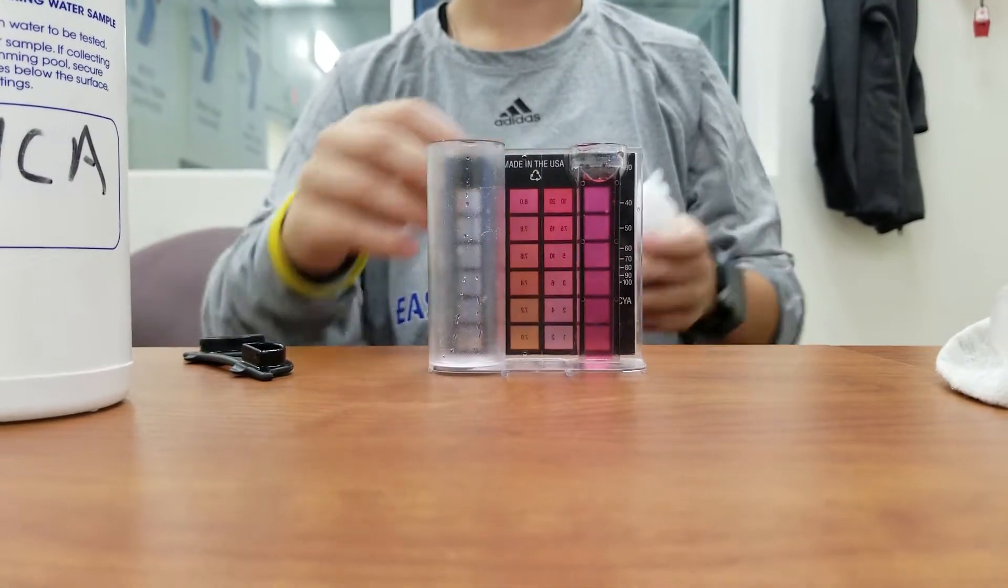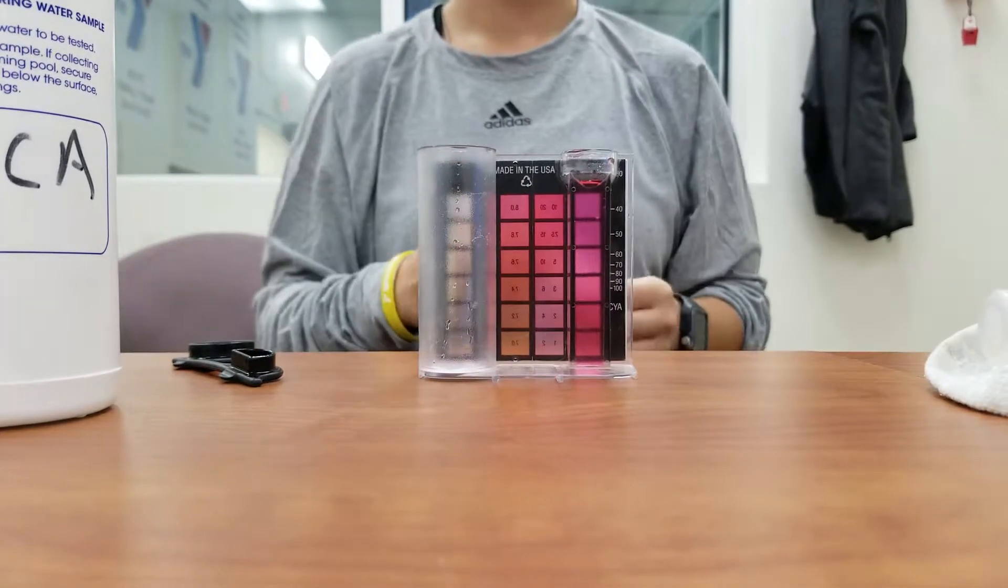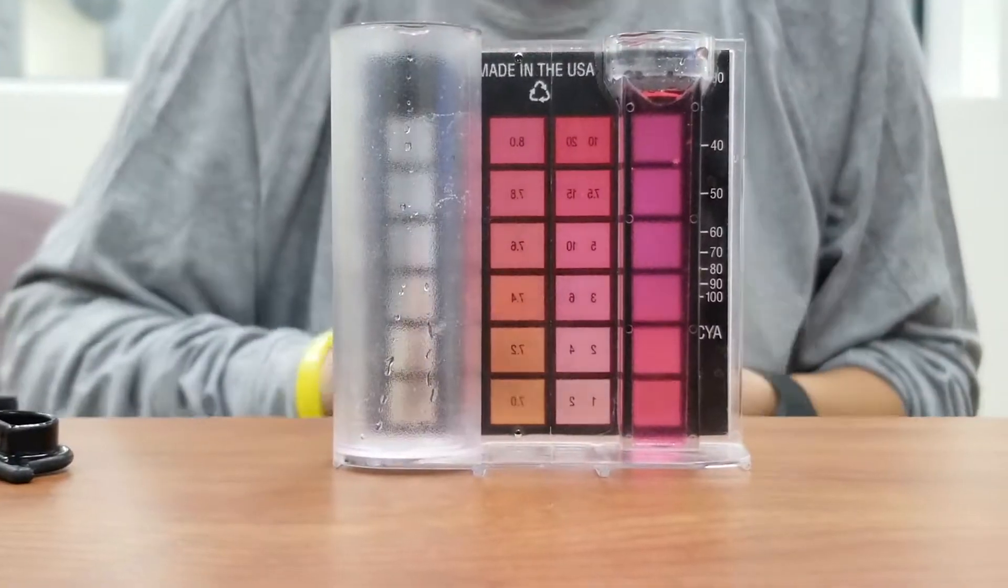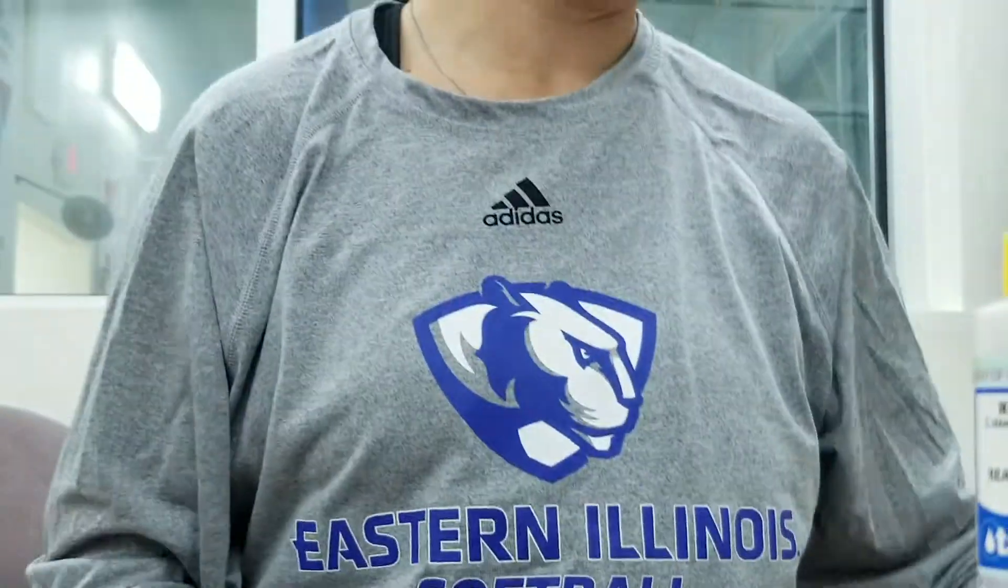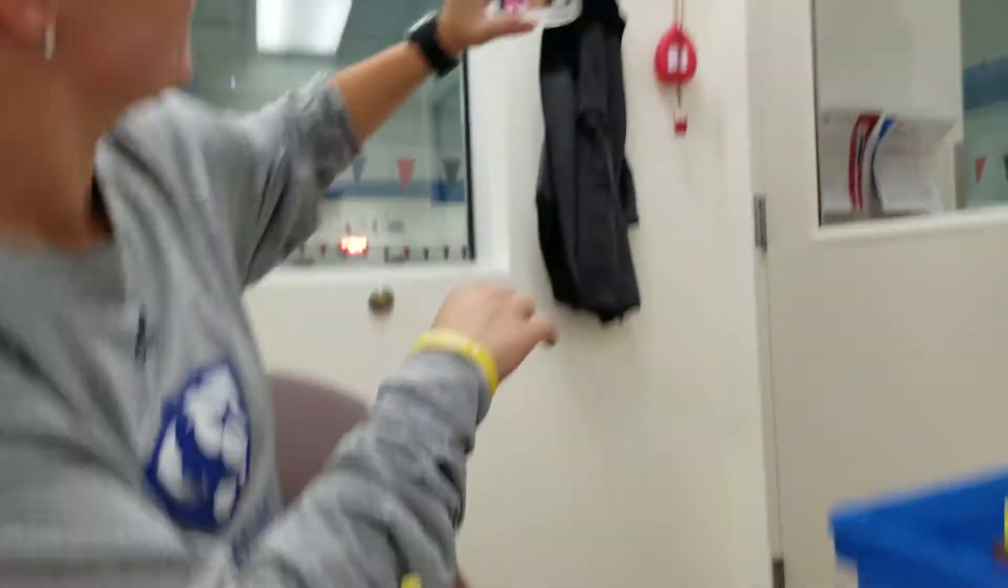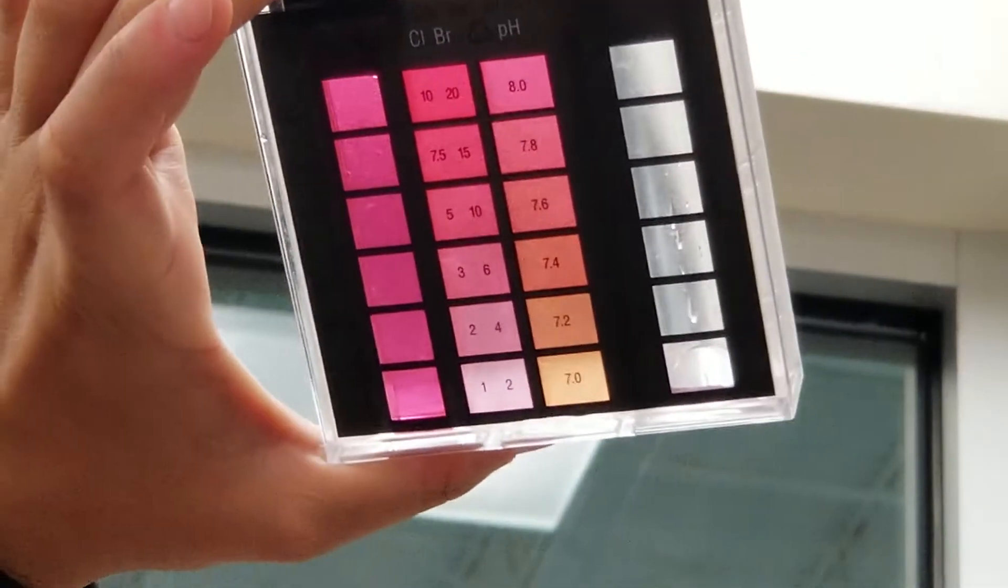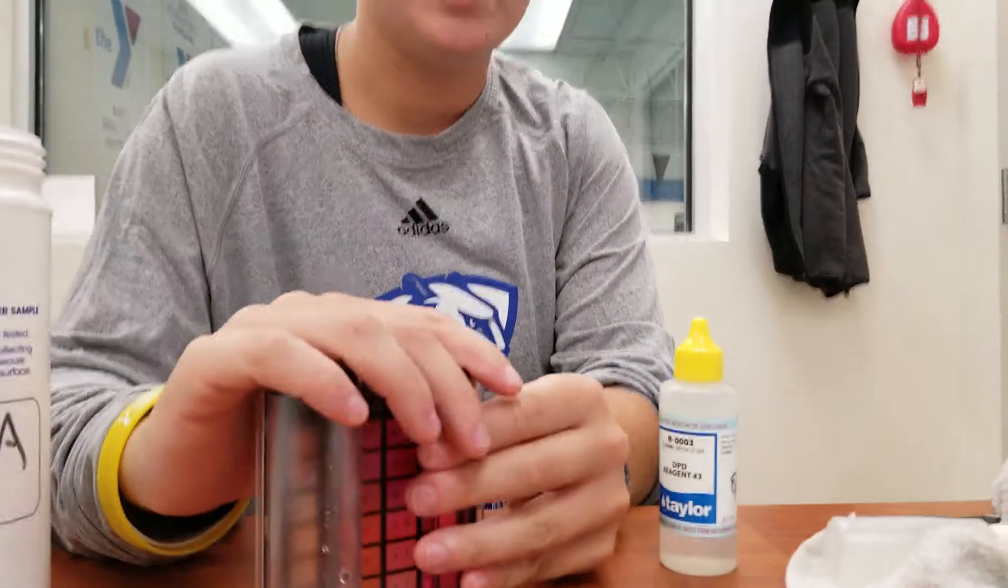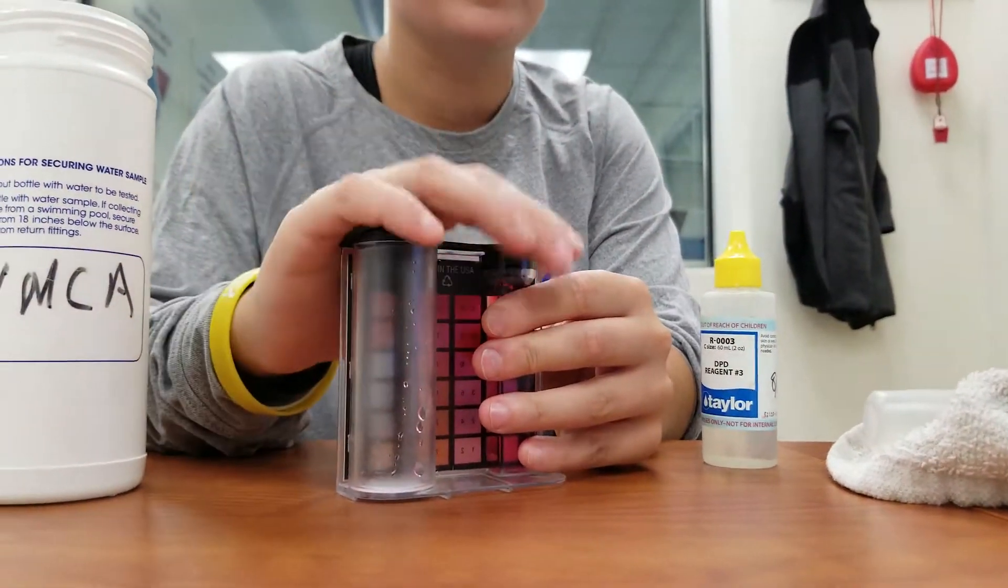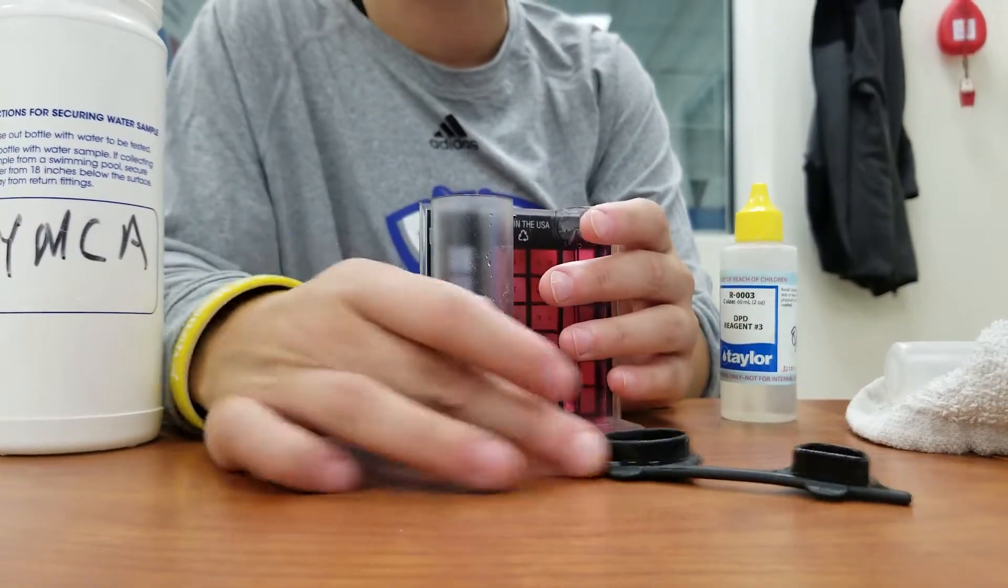Now we'll add five drops of R003, and it should change to a much darker color. Shake it up, test it to the light, and what's that look like? Probably about a six or seven. The reason these numbers are so close right now is because we just shocked the pool, so it's actually right where we want them. We want those numbers to be extremely close.